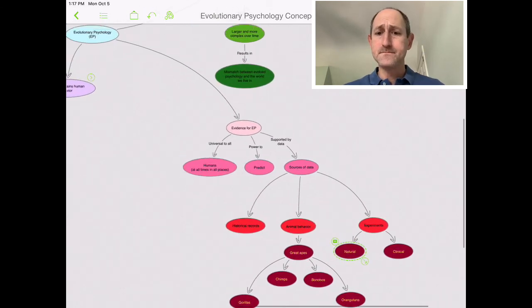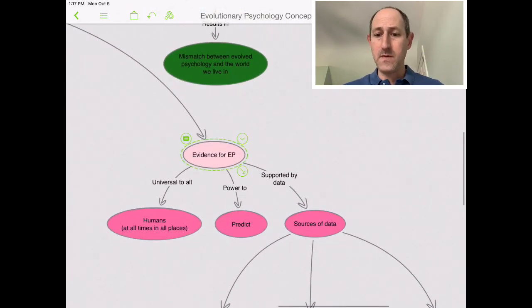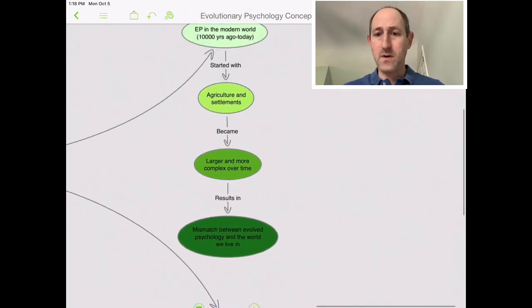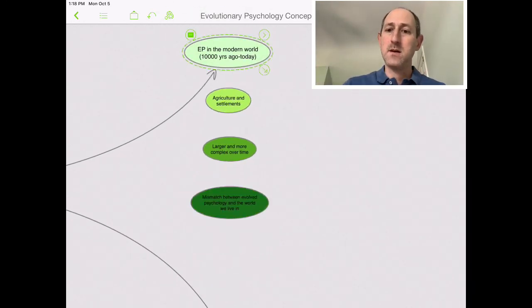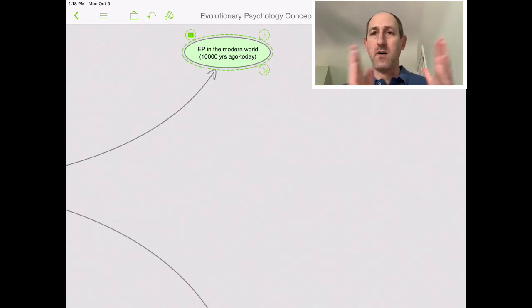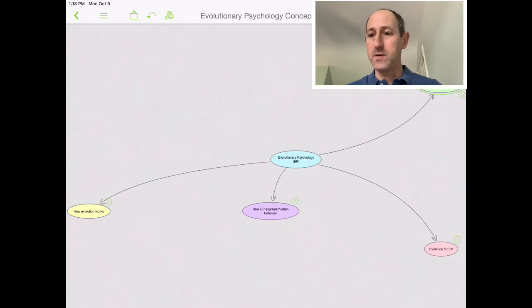All right. So those are the two big ideas here: evidence for evolutionary psychology and understanding the mismatch between evolutionary psychology evolved hundreds of thousands of years ago versus today and where those things don't match up. As usual, if you have questions, let me know.